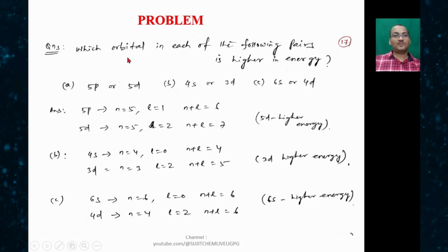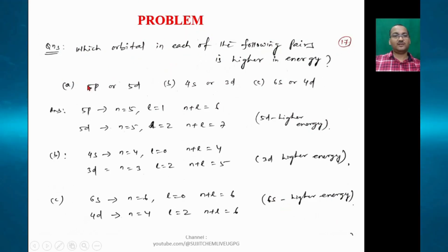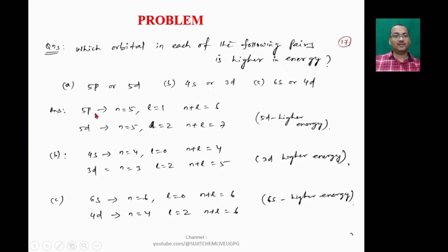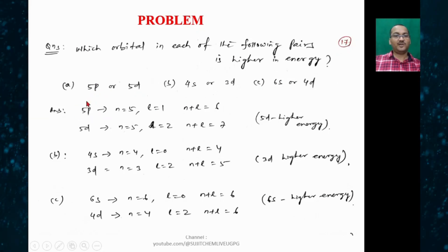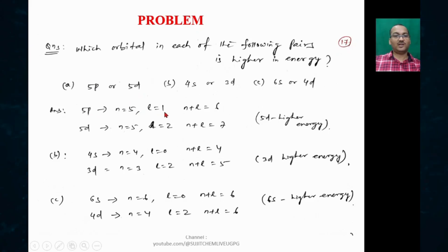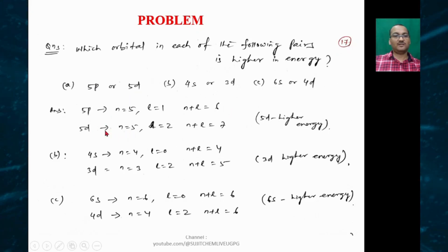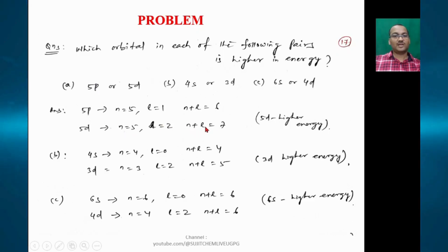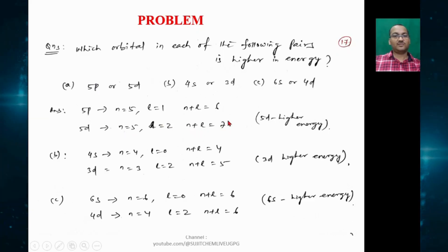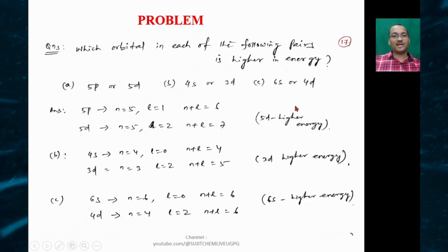Let's try some problems. Which orbital has higher energy — 5p or 5d? For 5p: n=5, l=1, so n+l=6. For 5d: n=5, l=2, so n+l=7. Obviously 5d is higher in energy. Similarly, for 4s and 3d: for 4s, n=4, l=0, so n+l=4. For 3d, n=3, l=2, so n+l=5. So 3d orbital is higher in energy.